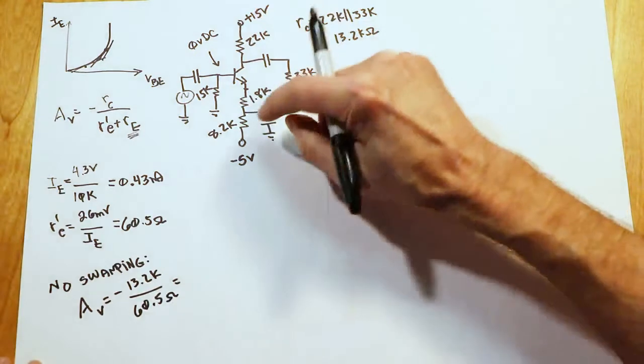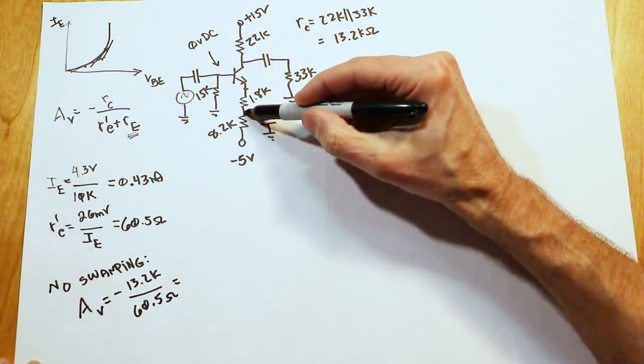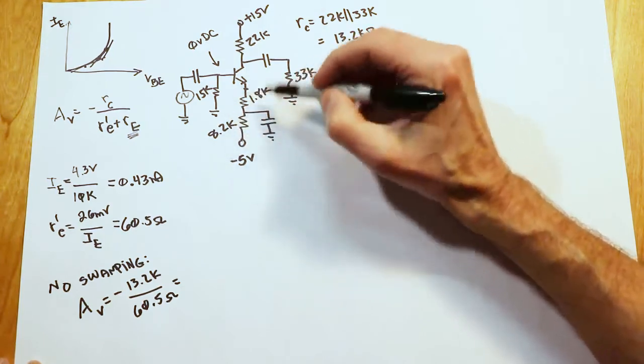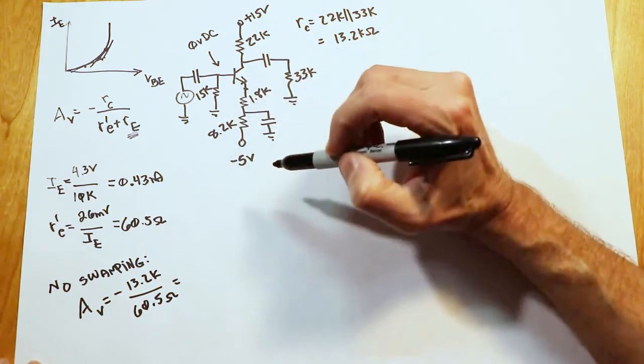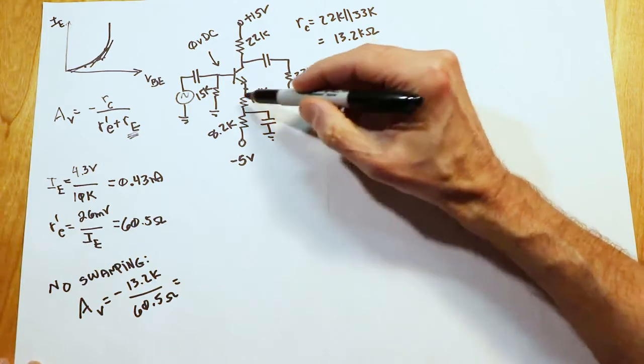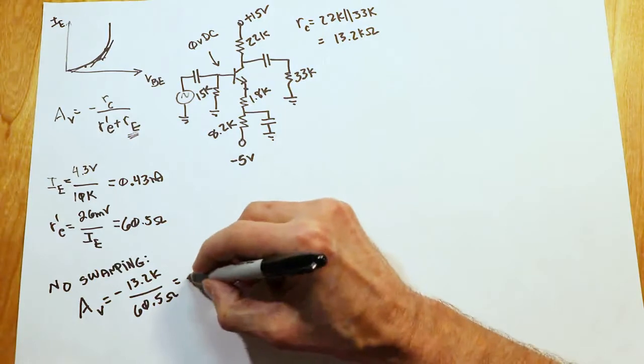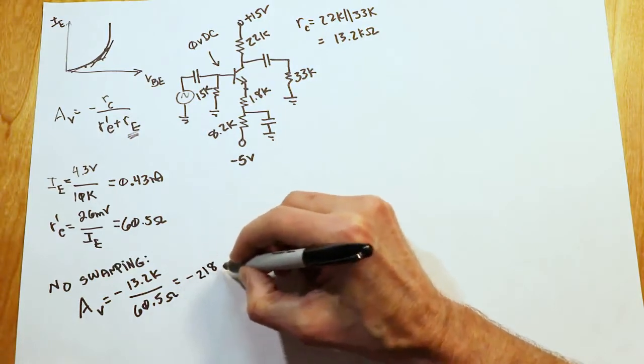Essentially, if you just picked up this capacitor and just moved it from this juncture to this point, it would completely bypass both of these resistors, and your emitter would be at AC ground. Your swamping resistance effectively would be 0. So when we divide this out, we get a gain of negative 218.2.